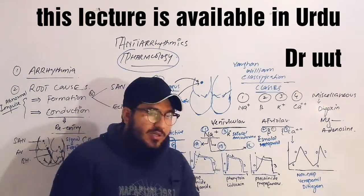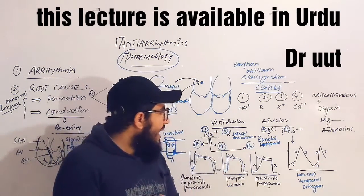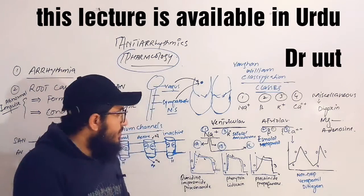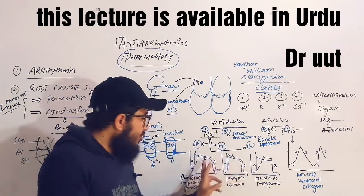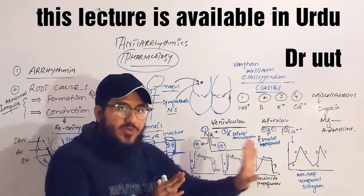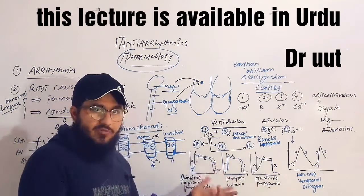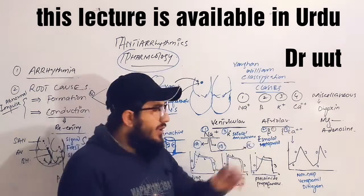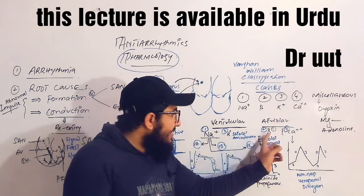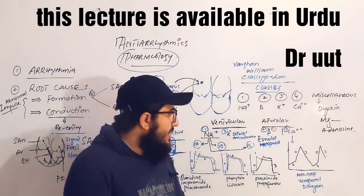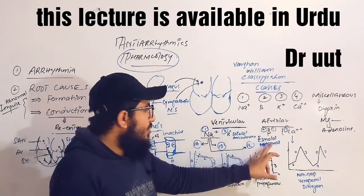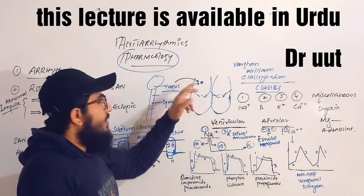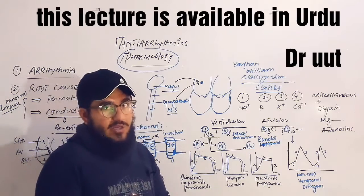For potassium channel blockers (Class 3), drugs like sotalol and amiodarone block the potassium channel, causing a delay in the repolarization phase. For beta blockers (Class 2), drugs like esmolol and metoprolol block sympathetic input to the sinoatrial node. With reduced sympathetic stimulation, there is a reduction in the number of impulses generated by the SA node.